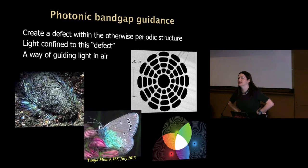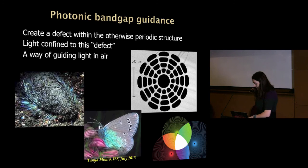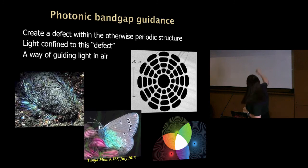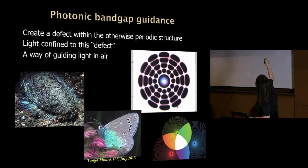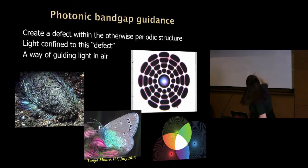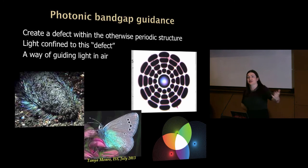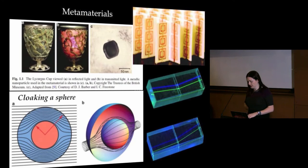Here's an example of one we've made in our lab where we've made a two-dimensional photonic crystal wrapped around an air hole. That allows us to guide light in air, because that particular range of wavelengths — you can actually see a bluey-purplish tinge — reflects the wavelengths which are not allowed to travel in the periodic structure.